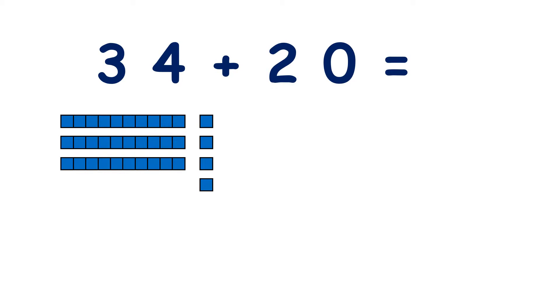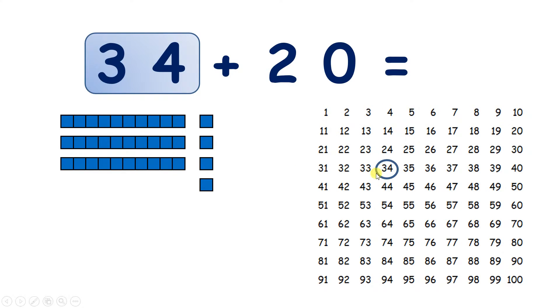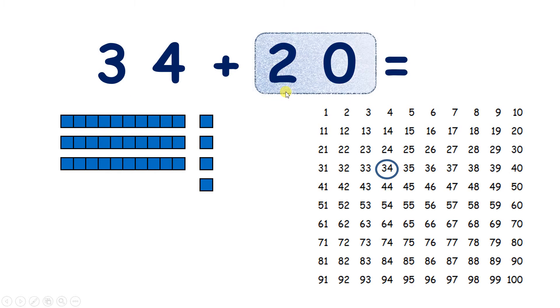We have 34 add 20. So we start with 3 tens and 4 units. So we can find 34 on our 100 square. And we want to add 20, which is 2 tens.